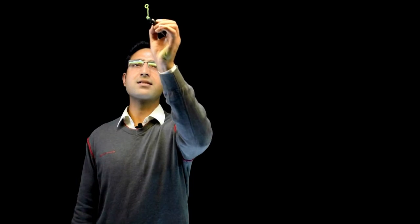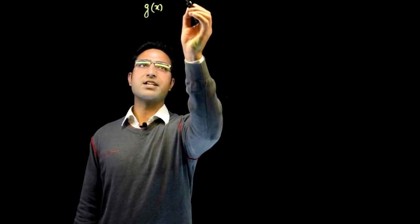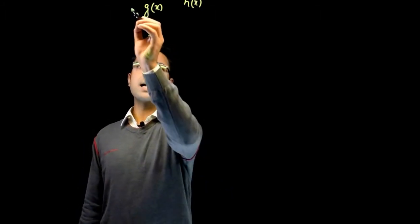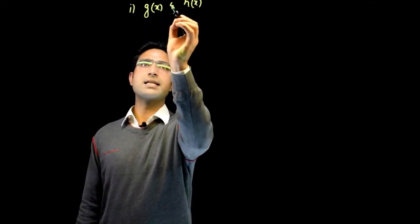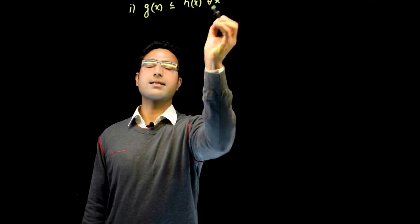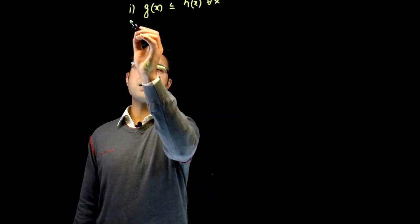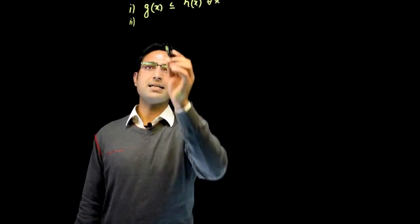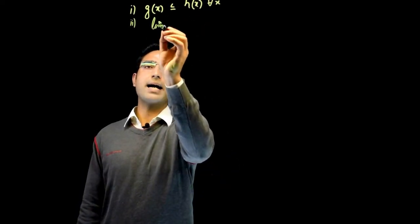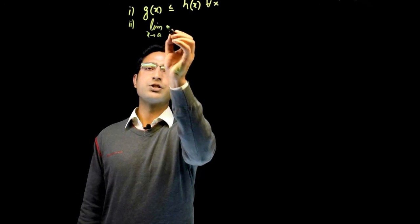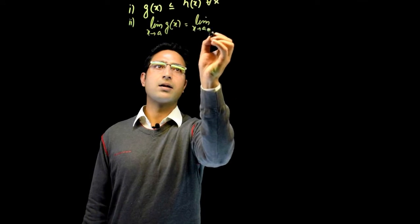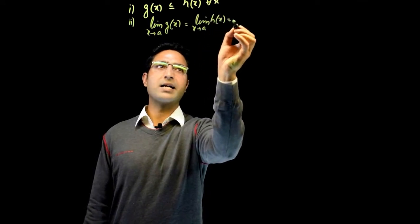In order to understand this theorem, let me consider two functions g(x) and h(x) with two conditions. First condition is that g(x) less than or equal to h(x) for all x. The second condition being that if a is in the domain of g(x) and h(x), then limit x approaches a of g(x) is same as limit x approaches a of h(x), and let it be equal to L.